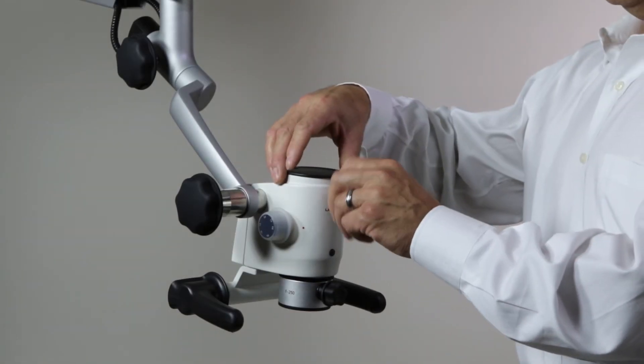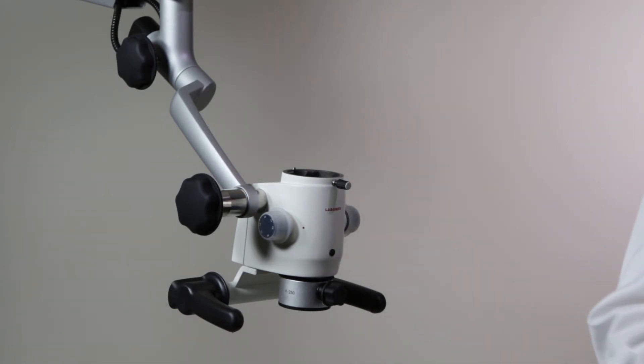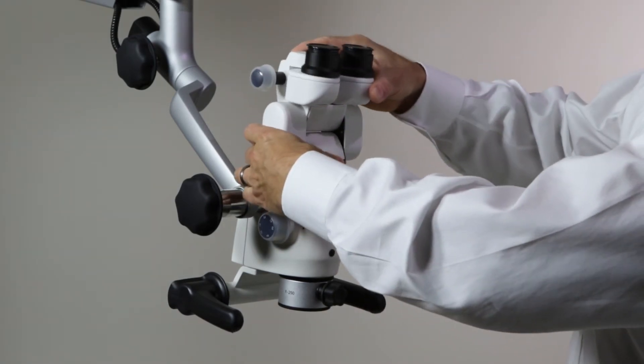Remove the dust cap by loosening the thumb screw in front of the microscope body. Place the binocular head and retighten the thumb screw.